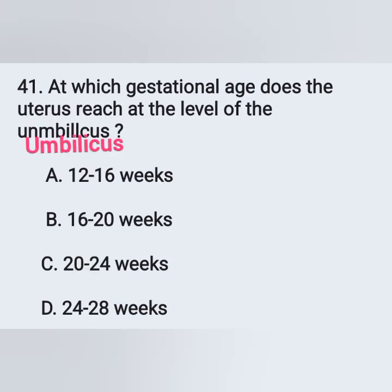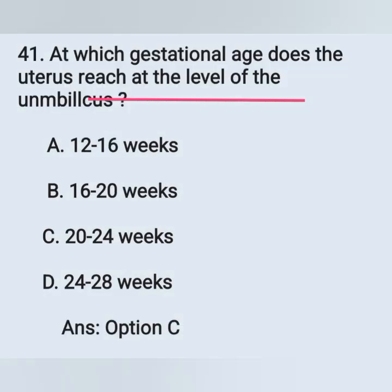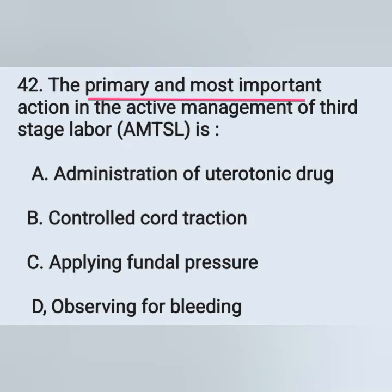Question 41: At which gestational age does the uterus reach the level of the umbilicus? Options: option A, 12 to 16 weeks; option B, 16 to 20 weeks; option C, 20 to 24 weeks; option D, 24 to 28 weeks. The correct answer is option C, 20 to 24 weeks. At 16 weeks the fundus is halfway between the symphysis pubis and umbilicus; at 20 to 24 weeks it reaches the umbilicus; at 36 weeks it reaches the xiphoid process.